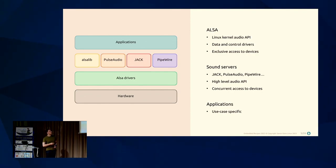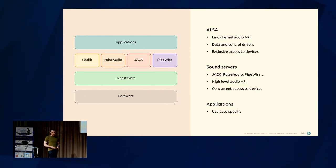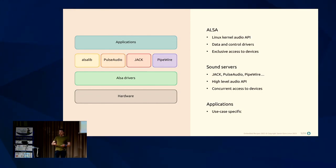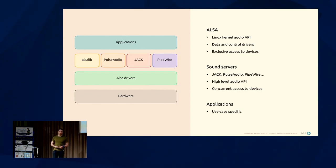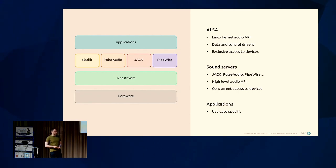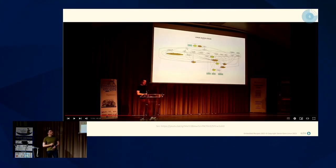Two solutions exist today: JACK, which is very popular for real-time audio processing and with music creators, and PulseAudio, which is very common in the desktop world — pretty much plug-and-play and extensible, but with very high latency, so not really usable for complex audio systems requiring real-time processing. And now there is a new player called PipeWire.